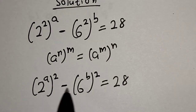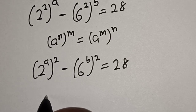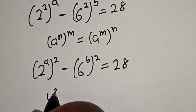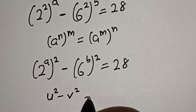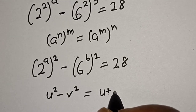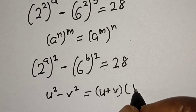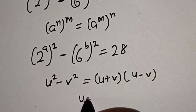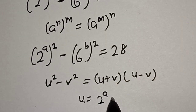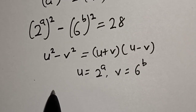Now if you look at this very well, this is a difference of squares. That is, if you have u squared minus v squared, this is equal to u plus v multiplied by u minus v. In this case, u is equal to 2 to the power of a, and v is equal to 6 to the power of b. Now let's substitute.